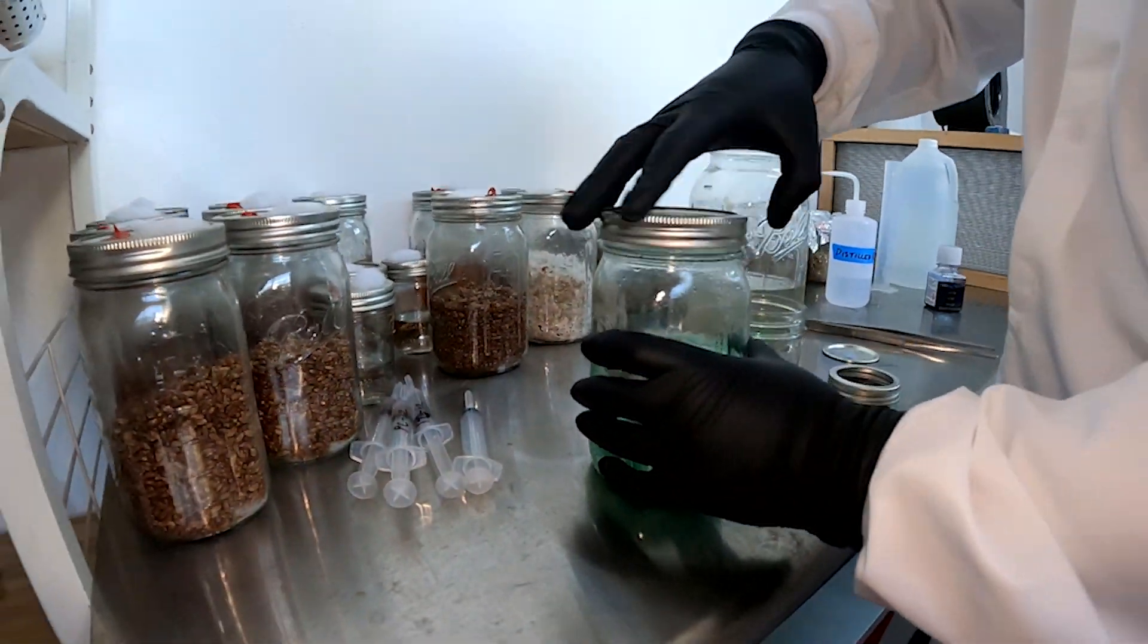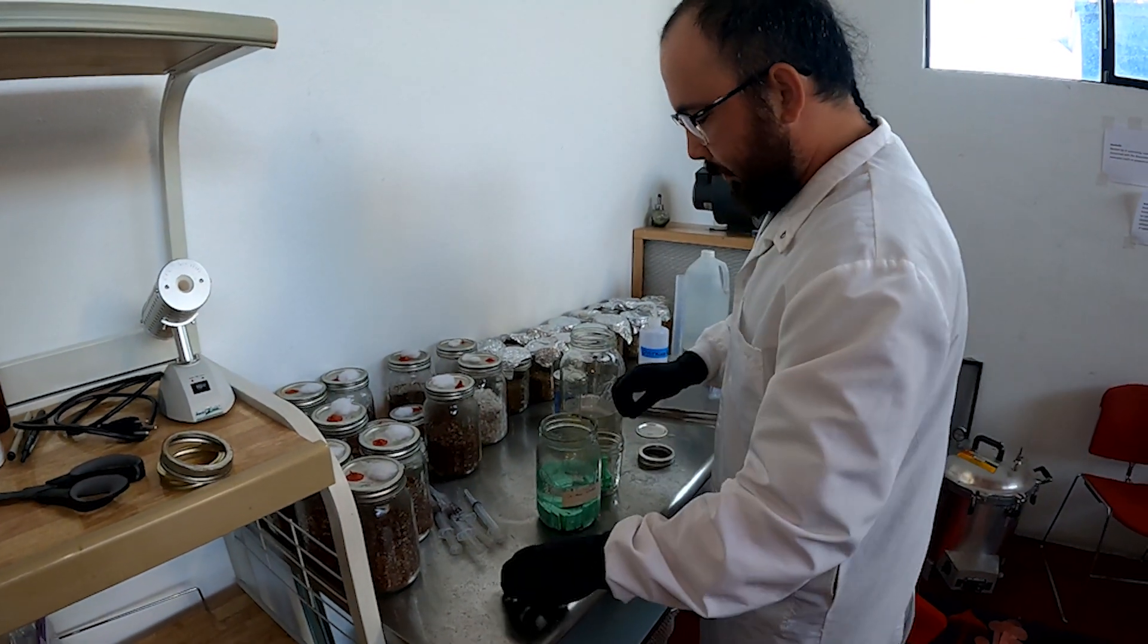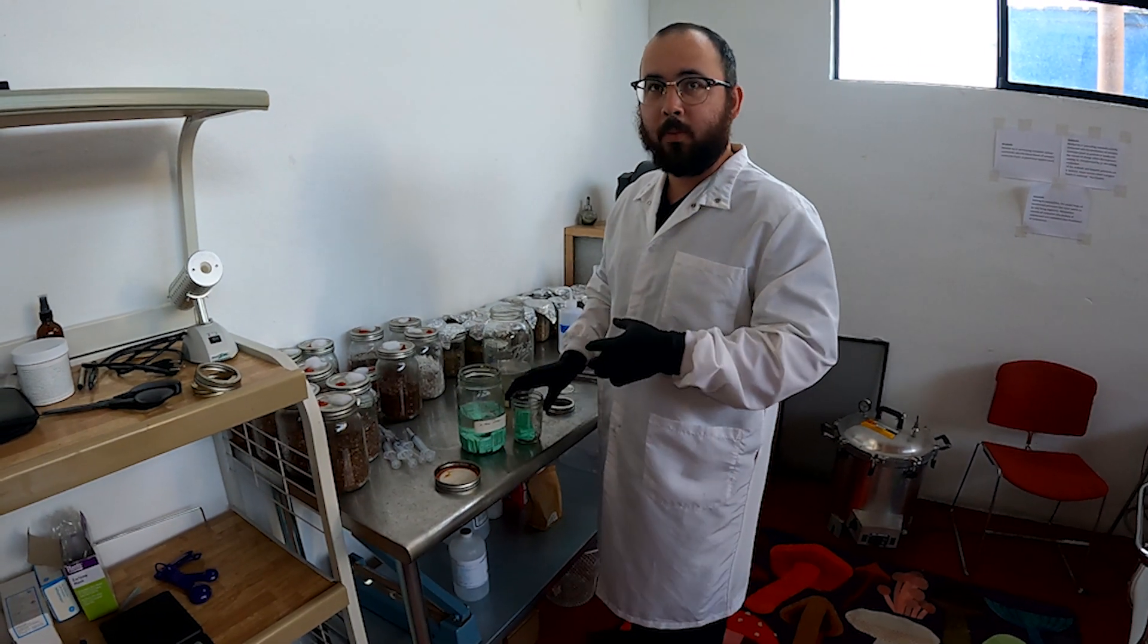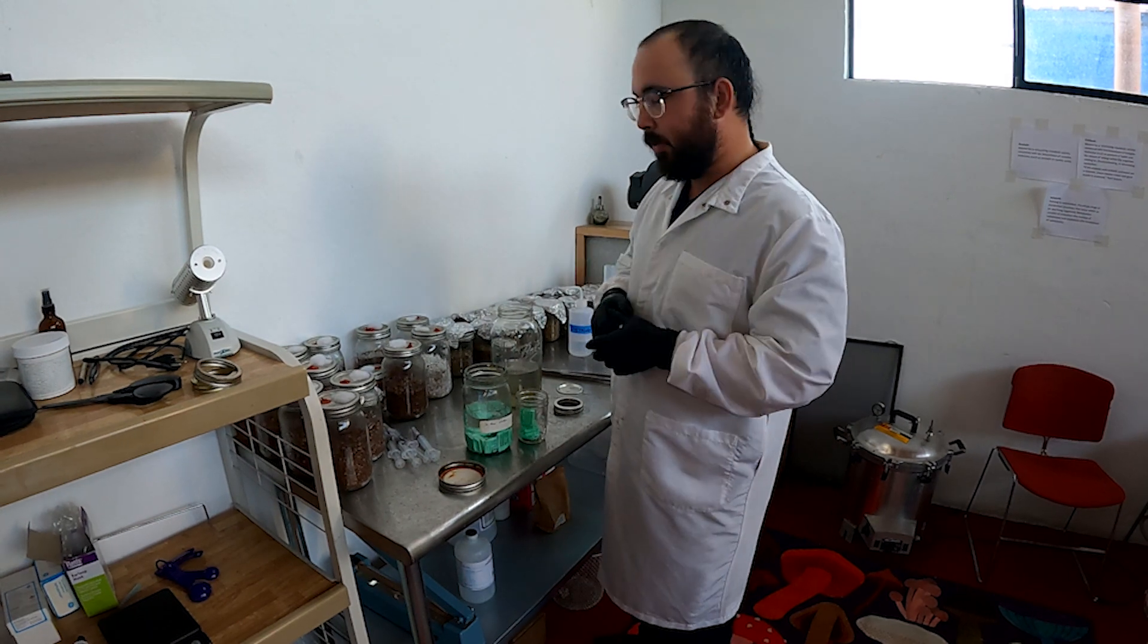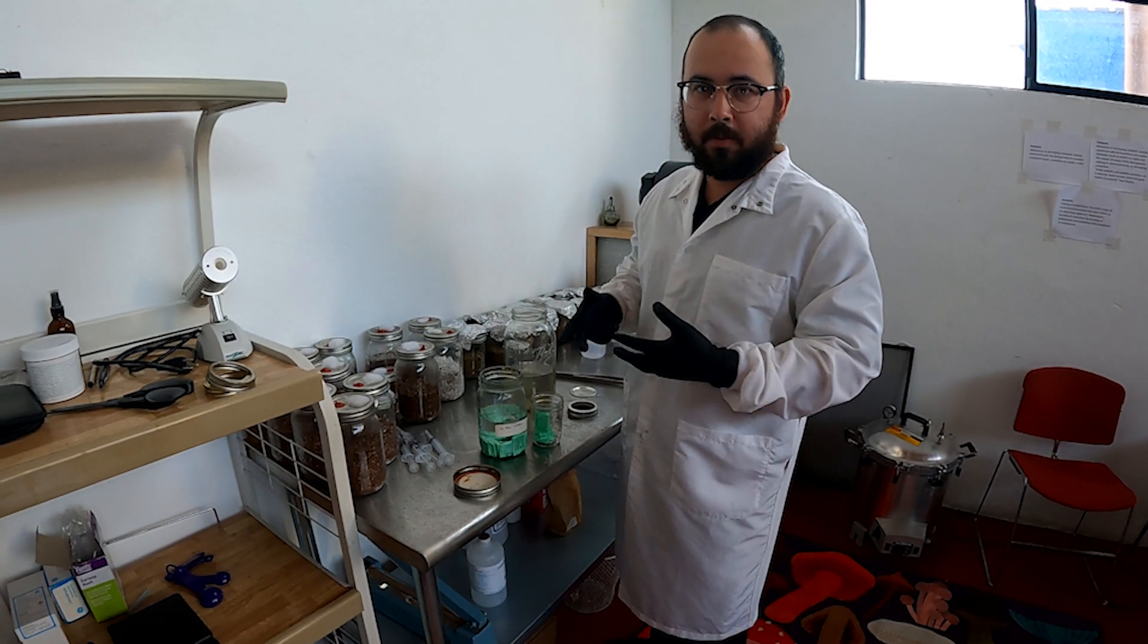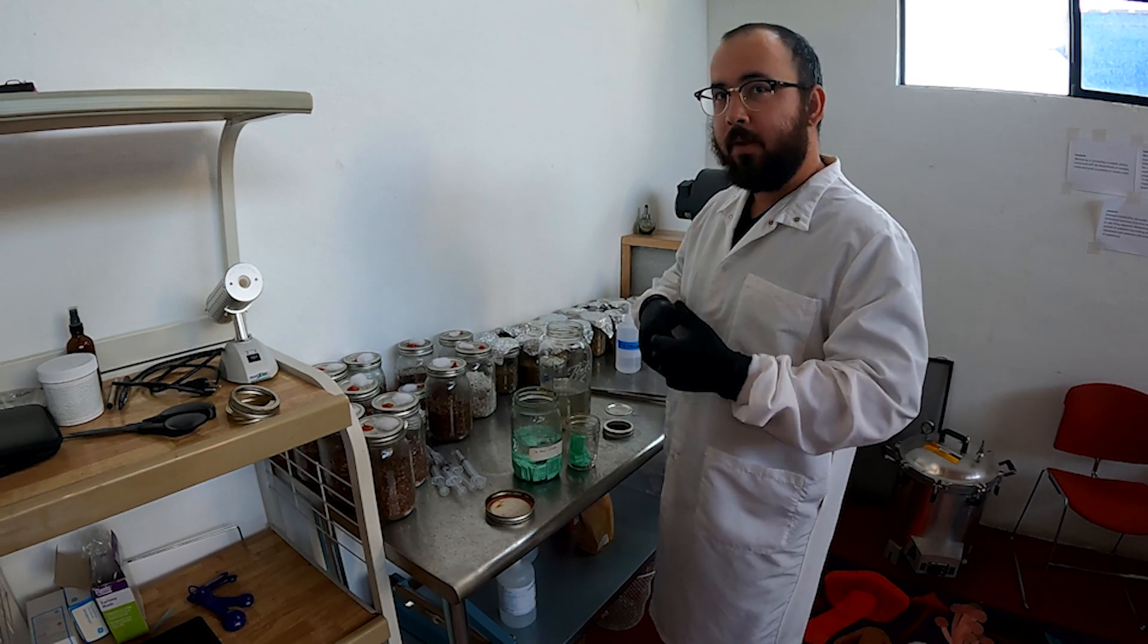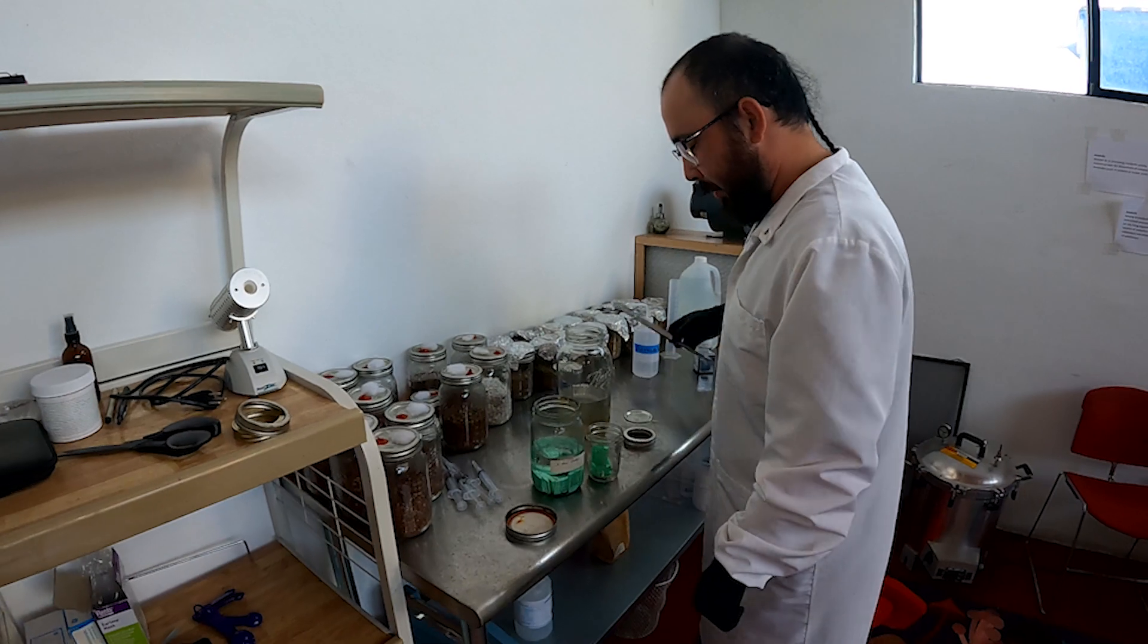So now we're going to put this into our de-stain solution and you'll see there's other older samples in there. You can store them in here for a long time. But the de-stain solution, right now, if we were to look at these underneath the microscope, they'd be way too blue. So it'd be like full of background. It'd be hard to really see the mycorrhizae. Everything would just be blue. So we want to de-stain it a little bit for about a week. Then we'll take it out and look at it underneath the microscope.